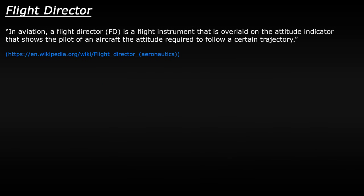A Flight Director is an instrument which is overlaid on the Attitude Indicator in the cockpit, which advises a pilot to fly a certain trajectory or direction. Attitude Indicators which have a Flight Director feature are sometimes referred to as the Attitude Director Indicator, or ADI for short. The Flight Director is typically used along with the Autopilot, however a plane can be flown manually with the Flight Director enabled. Normally a Flight Director will guide the pilot based on values entered in the Autopilot panel, or it may use information from a pre-planned route.